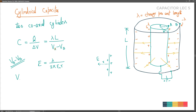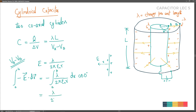To find VA - VB, we use the relation: ΔV = -∫E·dr from A to B. Moving from A to B, the electric field and dr are in the same direction (outward), so cos 0° = 1. Taking constants outside the integral: λ/(2πε₀) · ∫(1/r)dr from a to b. The integral of 1/r is ln r, with limits a to b.